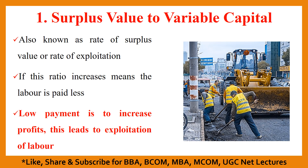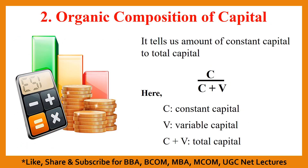The second ratio is the organic composition of capital, which tells us the amount of constant capital in the total capital. It is given by c upon c plus v, where c is the constant capital, v is the variable capital, and c plus v is the total capital.